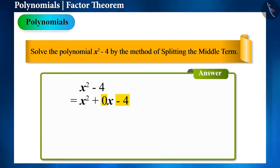That is, we need two such numbers whose product is -4 and the sum is 0. Friends, can those two numbers be +2 and -2? Yes.